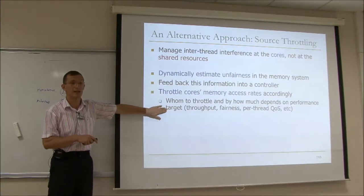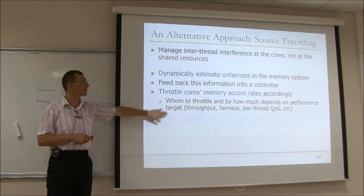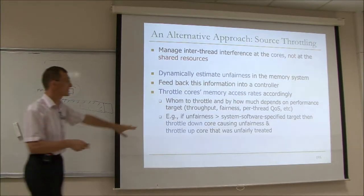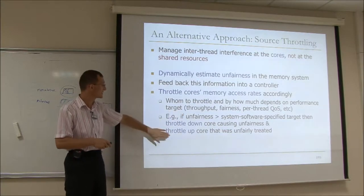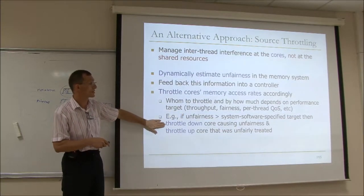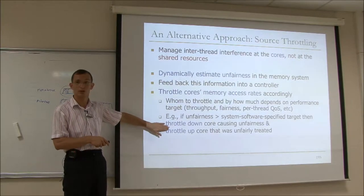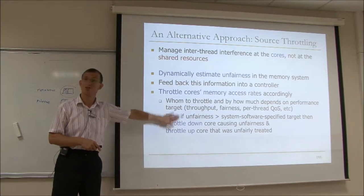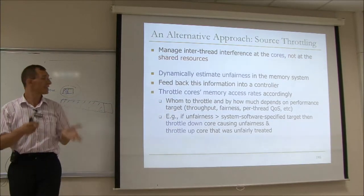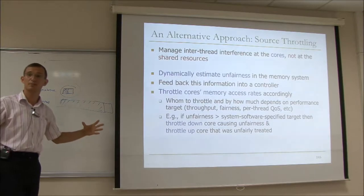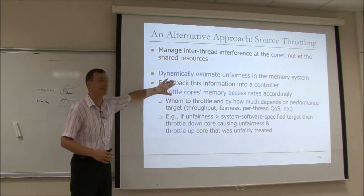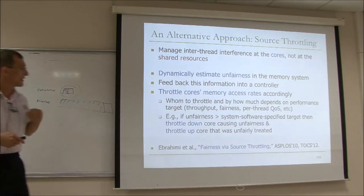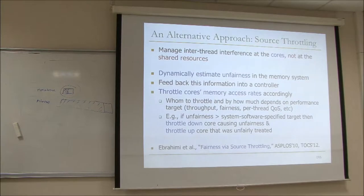Whom to throttle and by how much depends on the performance target — it could be throughput, fairness, per-thread quality of service, and so on. So we're going to have a configurable fairness mechanism. For example, if the unfairness in the system is greater than some system software specified target, we're going to throttle the core that's causing the unfairness and throttle up the core that was unfairly treated. This is described in a paper in ISCA 2010, and an extended version is in Transactions on Computer Systems.